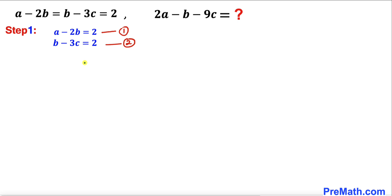If we observe very closely, we can see that the first equation has a and b, the second equation has b and c, and we want to find another equation that has a and c somehow. Therefore, let's go ahead and multiply this equation 2 by 2 on both sides.